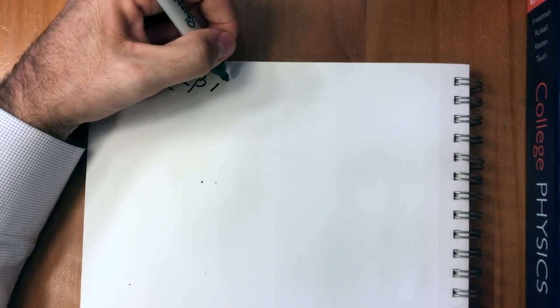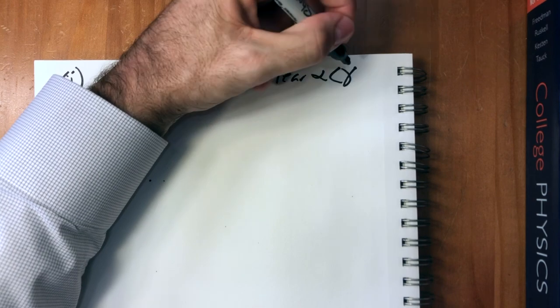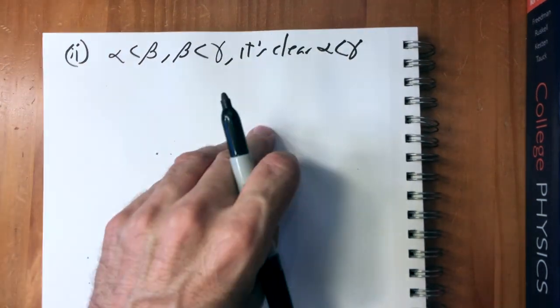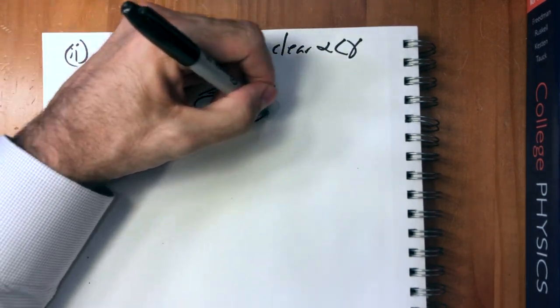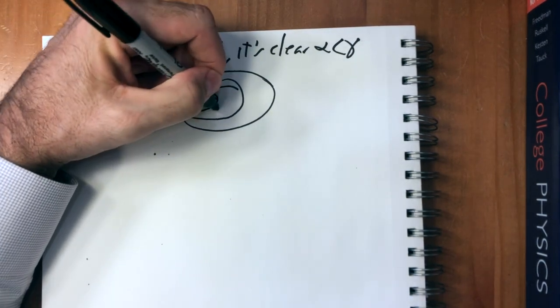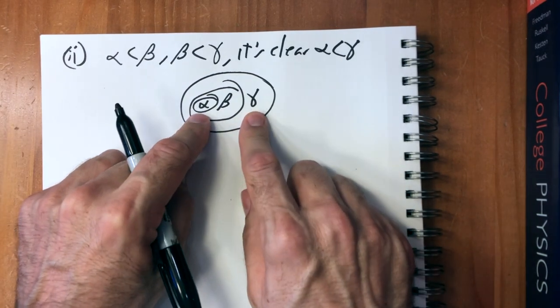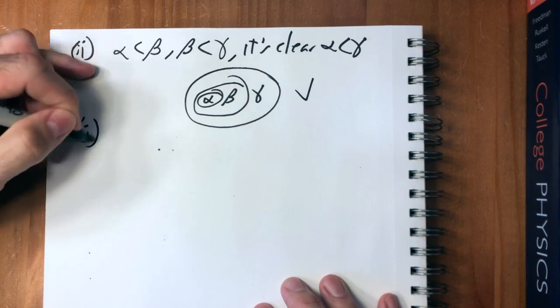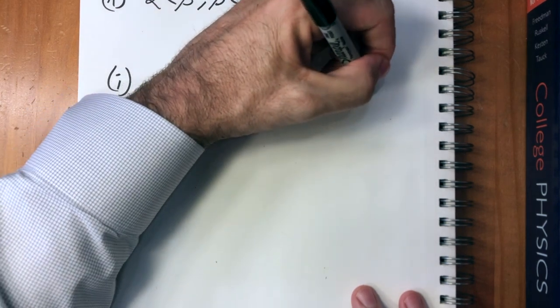The second condition is pretty obvious: if alpha is less than beta and beta is less than gamma, then clearly alpha is less than gamma, because a proper subset of a proper subset is a proper subset. If you have three sets alpha, beta, gamma, with alpha a proper subset of beta and beta a proper subset of gamma, then obviously alpha is a proper subset of gamma. It's also clear that at most one of the three relations — alpha less than beta, alpha equals beta, or alpha greater than beta — is true.